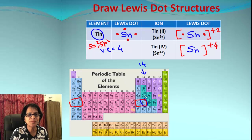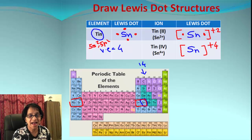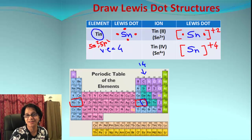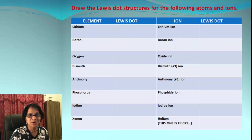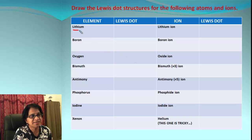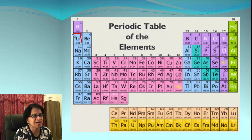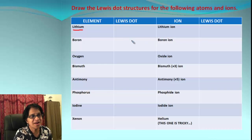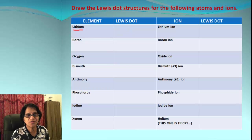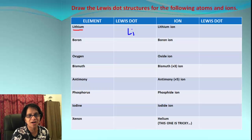It's simple: look at the element in the periodic table, identify the valence electrons based on the group number, and determine whether it loses or gains electrons. If it loses, it gets a positive charge; if it gains, it gets a corresponding negative charge. Now let's look at more Lewis dot structure problems. The first one is lithium ion. Lithium is in group number one, so it has one valence electron.